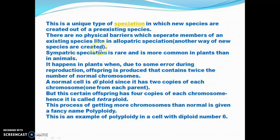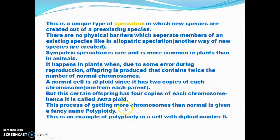Sympatric speciation is rare and is more common in plants than in animals. It happens in plants when, due to some error during reproduction, offspring are produced that contain twice the normal number of chromosomes. A normal cell is diploid since it has two copies of each chromosome, one from each parent. But certain offspring may have four copies of each chromosome — hence called tetraploid. This process of having more chromosomes than normal is known as polyploidy, which we have discussed in the genetics module under mutation.